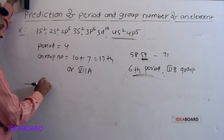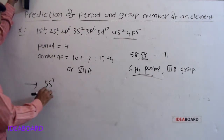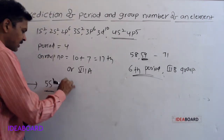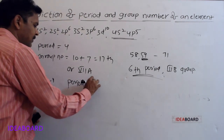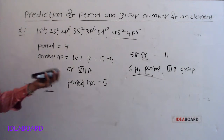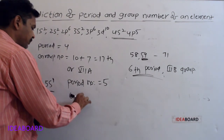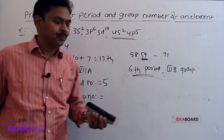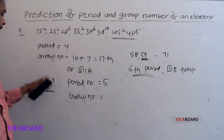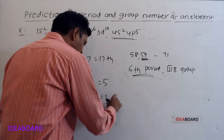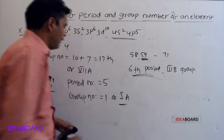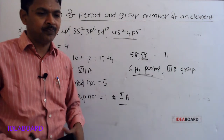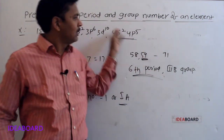For the given element, valence electronic configuration 5s¹ is given. Period number equals the principal quantum number, which is 5. The element belongs to the s block. For s block elements, group number equals the number of valence s electrons — here only 1. So it belongs to the first group or first A group. The element with electronic configuration 5s¹ belongs to the fifth period and first A group. This completes the prediction of period and group number in the modern periodic table.